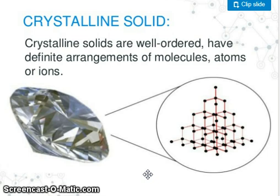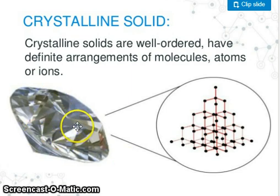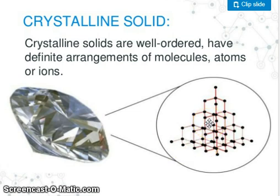So what is crystalline solid? Crystalline solids are well ordered and have definite arrangements of molecules, atoms, or ions. Look at this solid — crystals — and look at this arrangement of atoms in this.